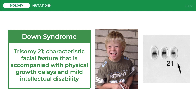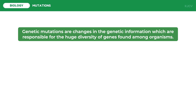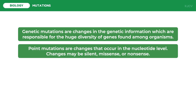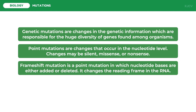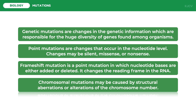To conclude this lesson, let us review the key points. Genetic mutations are changes in the genetic information responsible for the huge diversity of genes among organisms. Point mutations are changes that occur at the nucleotide level; they may be silent, missense, or nonsense. Frameshift mutation is a type of point mutation in which nucleotide bases are either added or deleted, changing the reading frame in the RNA. Chromosomal mutations may be caused by structural aberrations or alterations in chromosomal number. That ends our discussion on mutations.